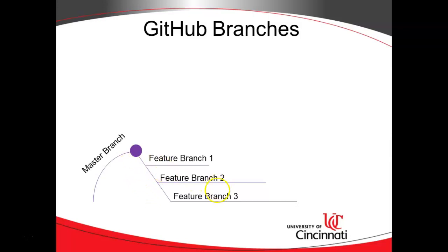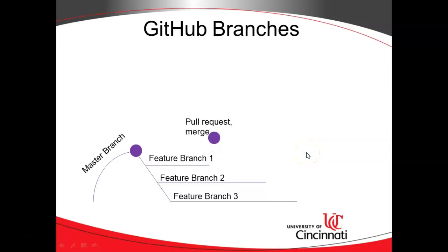So let's use these line lengths as a duration of the amount of work. Let's say that feature branch one was completed first. Here's our work, and what we're going to do is a pull request and then a merge. And that effectively grows the master branch by this one feature. It's met our definition of done — perhaps it's passed unit tests, code reviews, and even a technical debt analysis.